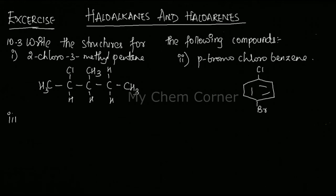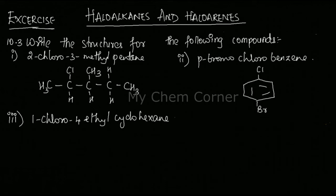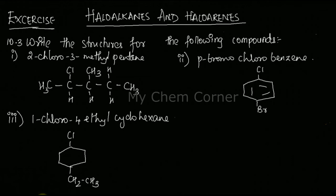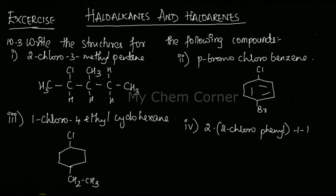Then I have 1-chloro-4-ethylcyclohexane — another simple one. The parent hydrocarbon is cyclohexane, which is just a six-member ring with no bonds inside. At the first position, I place Cl, and at the fourth position I should have an ethyl group, so counting one, two, three, four — the ethyl group goes at the fourth position.